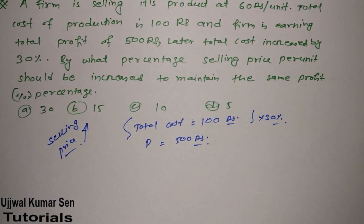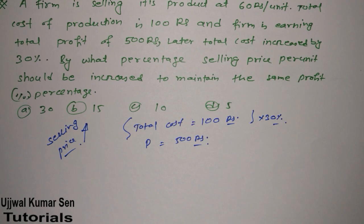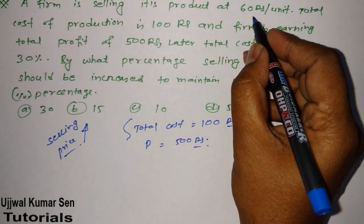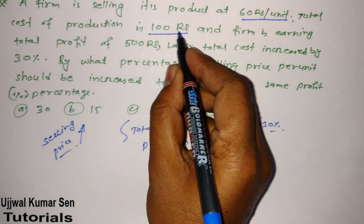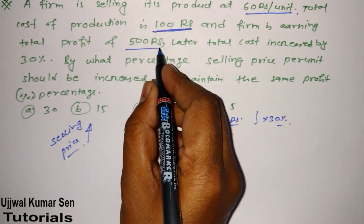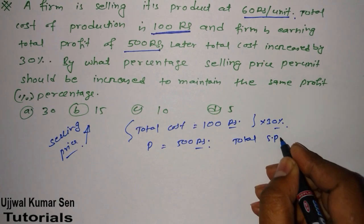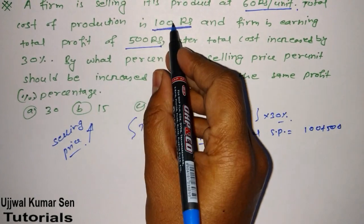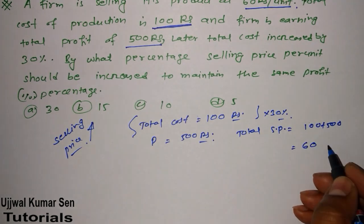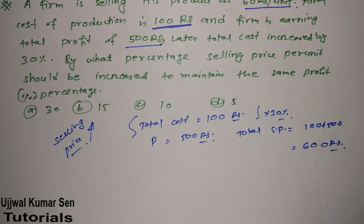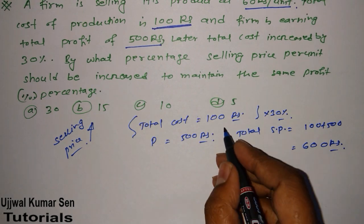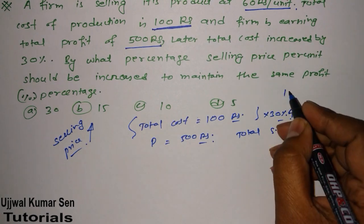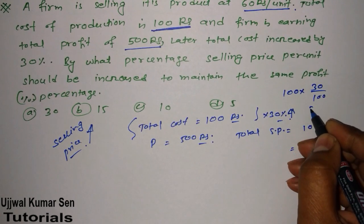Now one thing is not clear for us - the total selling cost. It says 60 rupees per unit and total production cost is 100 and total profit is 500. So total selling price is equal to 100 plus 500, which equals 600 rupees. Now there's a twist in the question. It states total cost is increasing by 30 percent. So 100 multiplied by 30 by 100 equals 30 rupees.